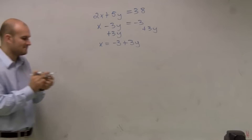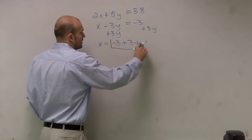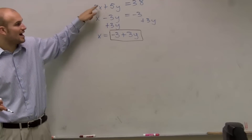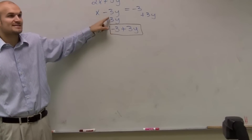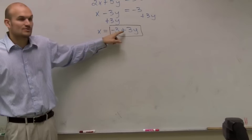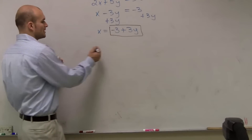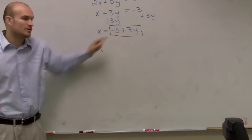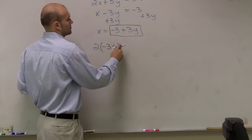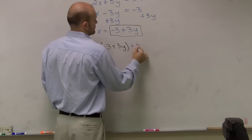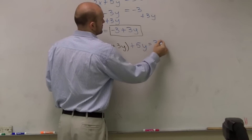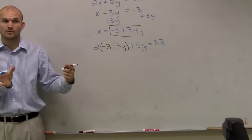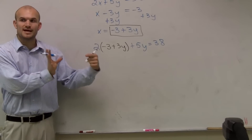So I have x equals negative 3 plus 3y. What I'm going to do is take this value and substitute it into the other equation. Rather than writing x, I can write in the value of what x is from my second equation, which is negative 3 plus 3y. I solved for a variable in one equation and substituted that into the other equation.